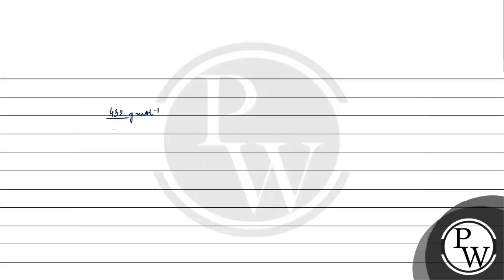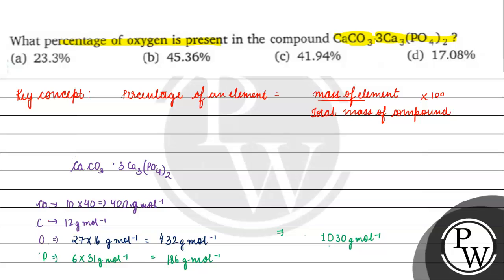432 gram per mole by 1030 gram per mole into 100. This will come out to be 41.94 percent. Coming back to the question, correct answer for this question will be option C. I hope you understood it well, thank you, all the best.